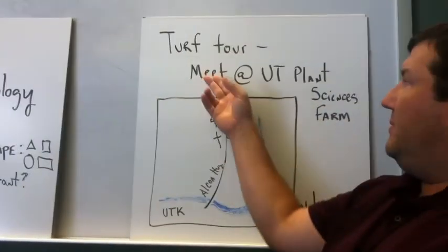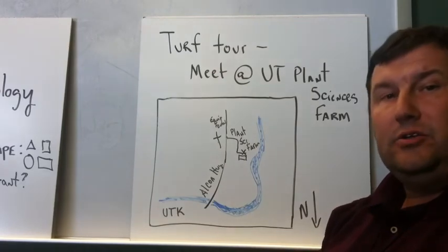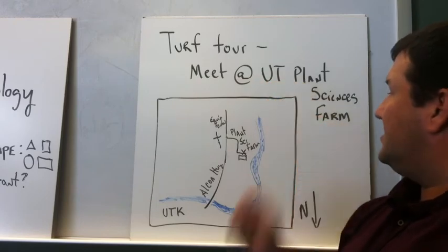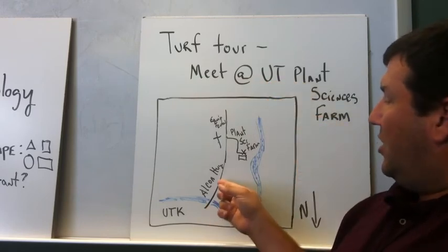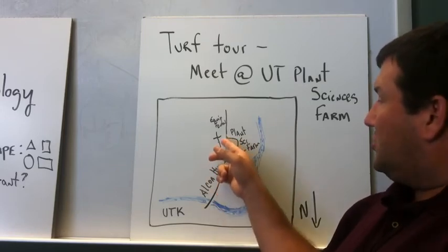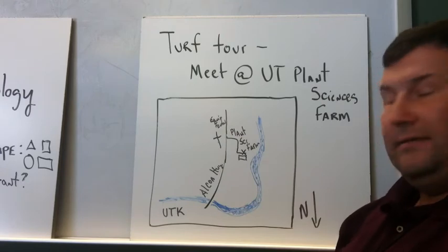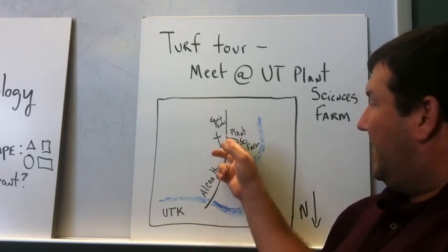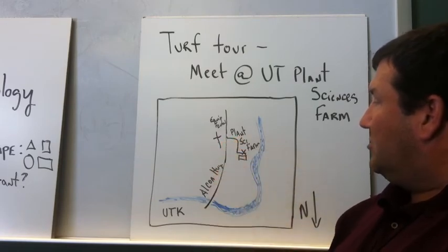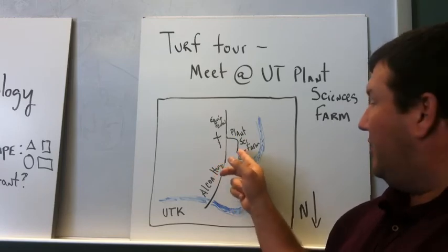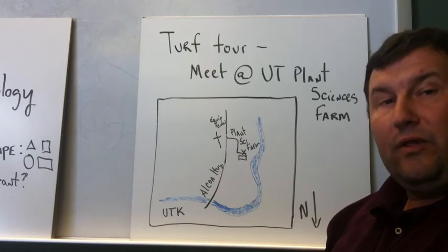So on Wednesday we're going to be doing a turf tour, and we need to do that turf tour out at our plant sciences farm. We're going to meet at the UT plant sciences farm, which is located on Alcoa highway south of campus, just across the street from a large church and equipment rental facility. If you take Alcoa highway south from campus on the right hand side a couple of miles down, you'll see the plant sciences farm. Follow the gravel path around to the right and then make a left at the first left you can see the main building, and we'll meet there at 3:30.